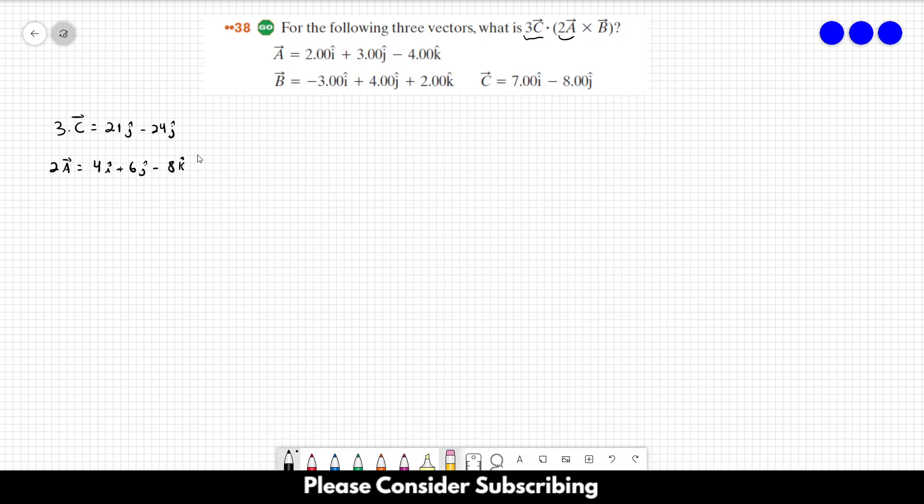Now we have to do this cross product. So 2 times vector A cross vector B is equal to the determinant of this matrix, which the first row is always the same: I hat, J hat, and K hat.